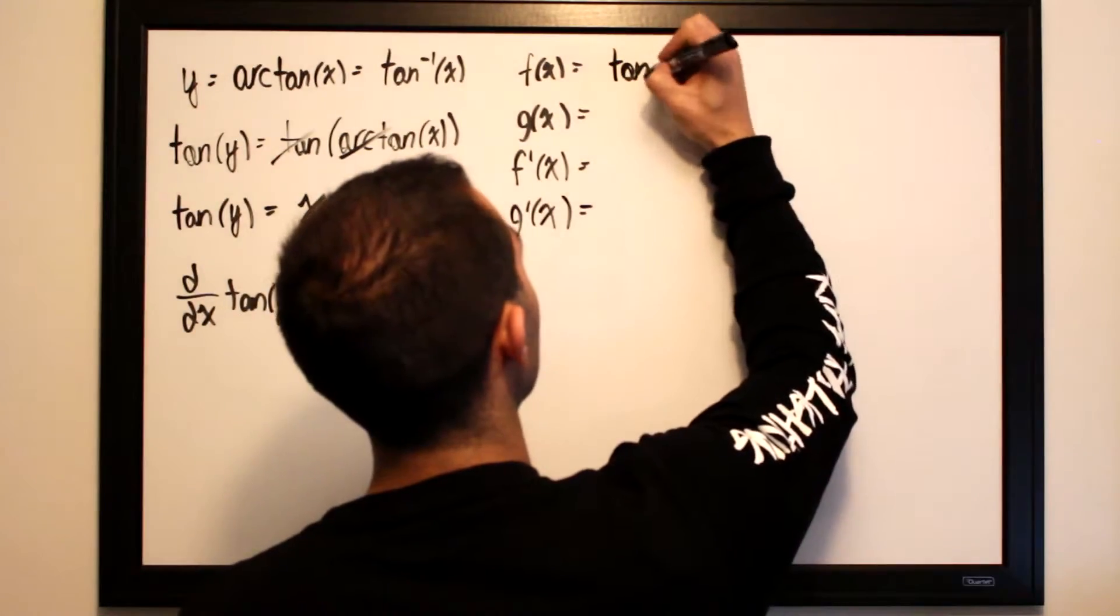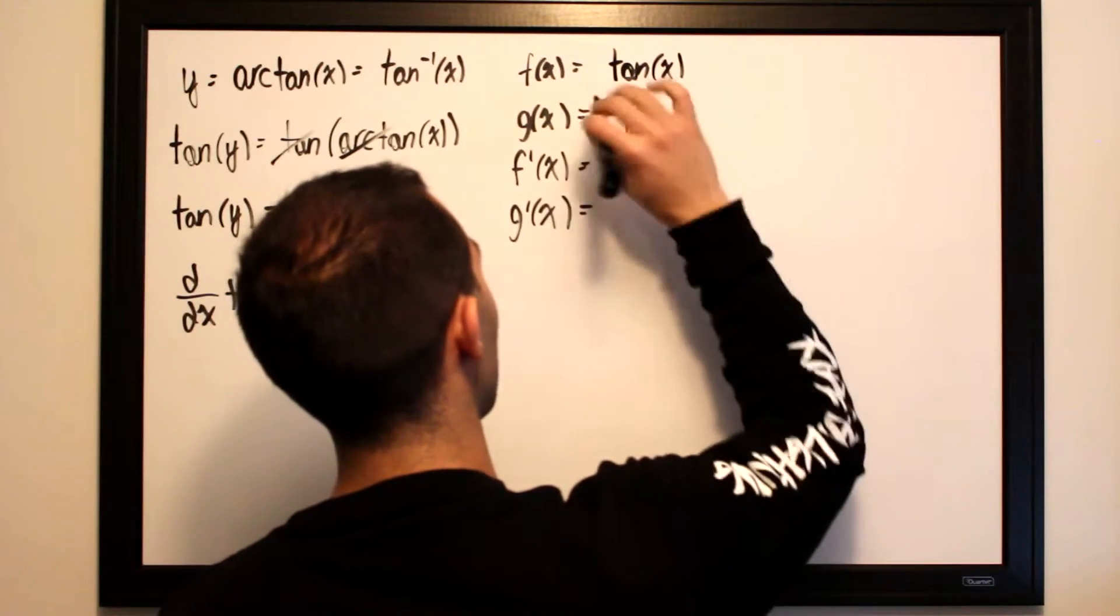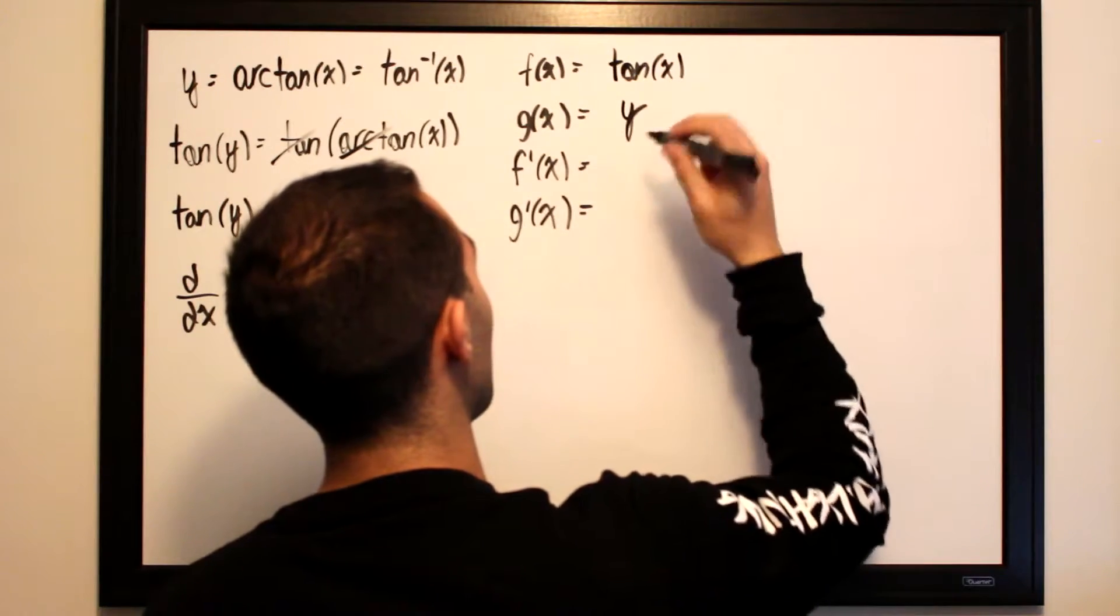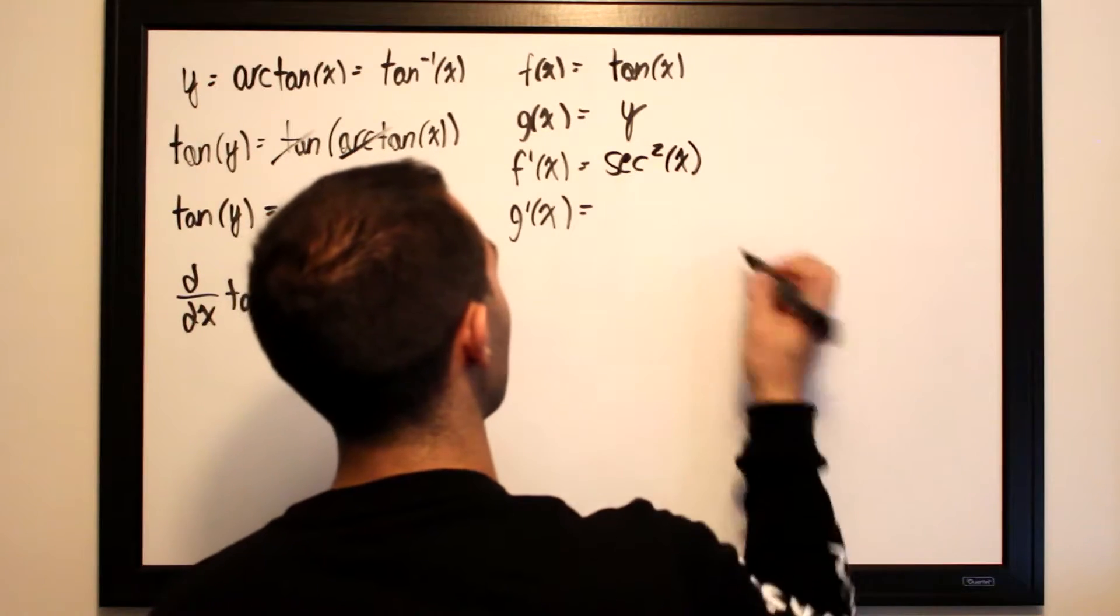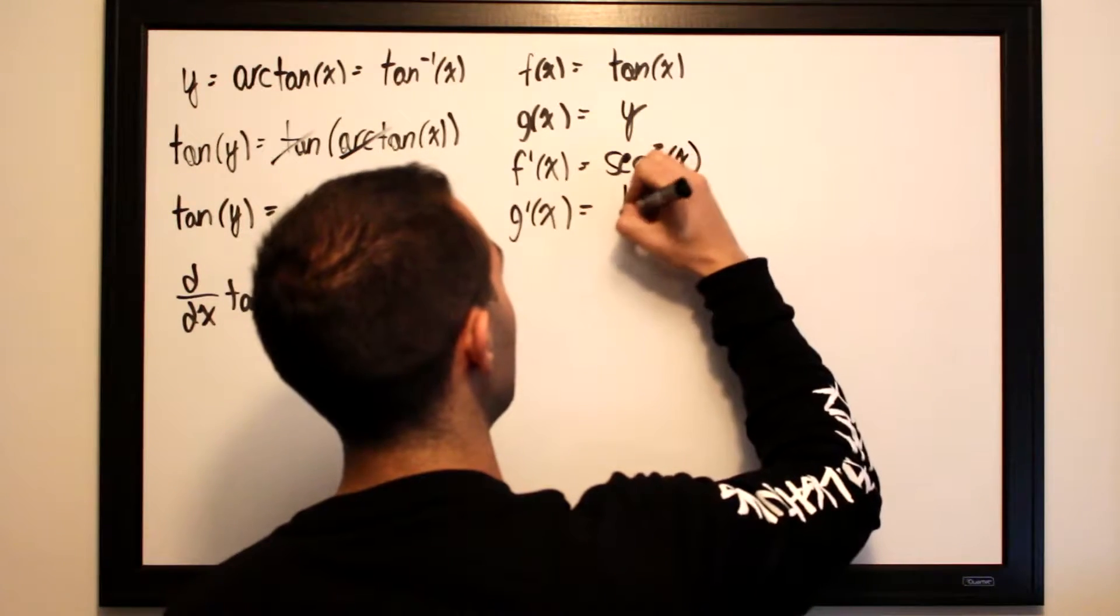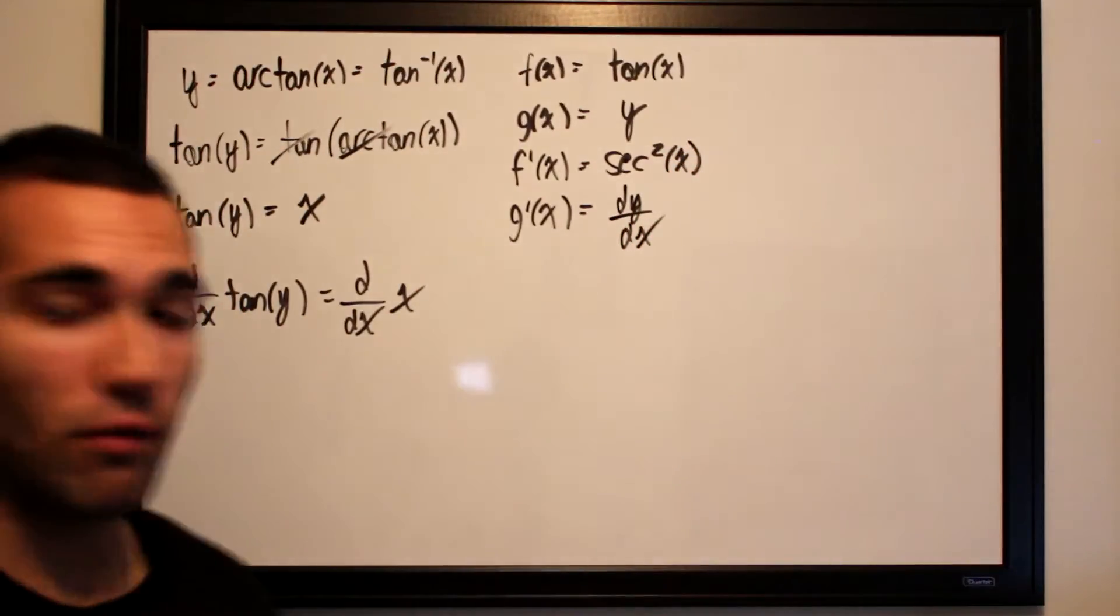Our outer function will be tangent of x, our inner function will be y, our derivative of our outer function will be secant squared of x, and the derivative of our inner function will be dy/dx, which is essentially what we're solving for.